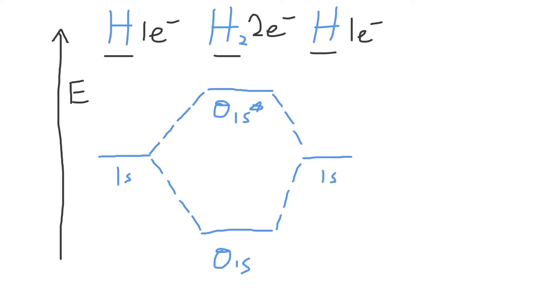So let's fill up our molecular orbital diagram now like we would with an electron configuration diagram. In the 1s atomic orbital put in one electron, and in the other 1s atomic orbital for the second hydrogen atom put in another electron.